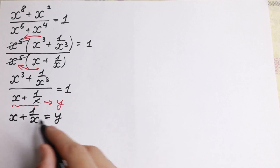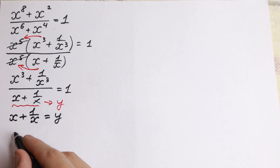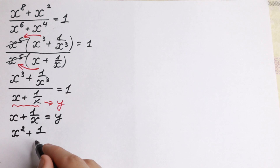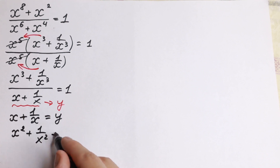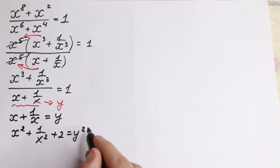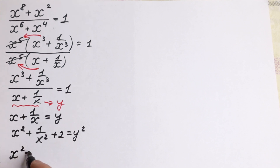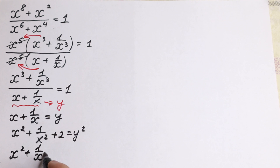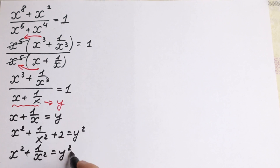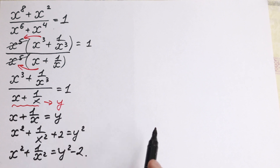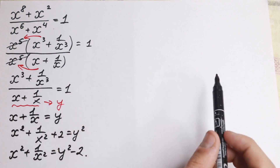First, let's raise y to the second power. We will have x squared plus 1 over x squared plus 2 equal to y squared. So if we talk about the square term, x squared plus 1 over x squared equals y squared minus 2. We just bring the 2 to the right-hand side. But this is the second power, and we need the third power.